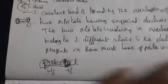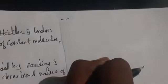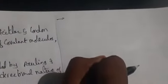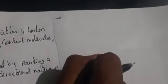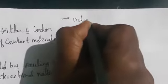A dative bond, also called a coordinate covalent bond, is formed by overlapping of an orbital having a pair of electrons and a vacant orbital.